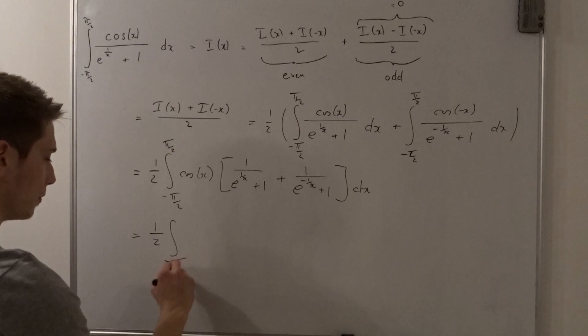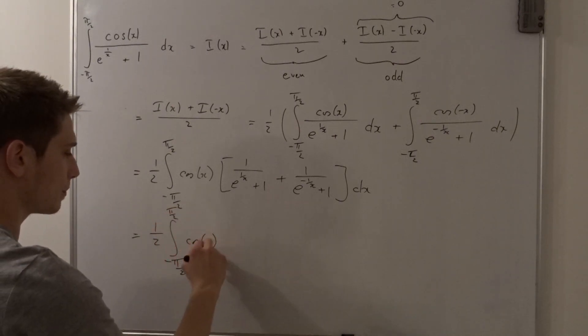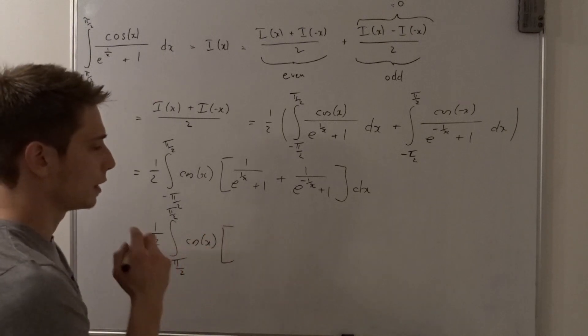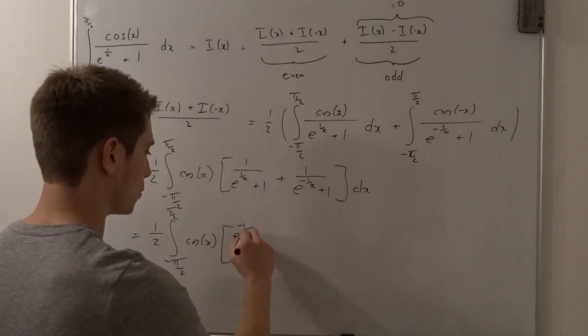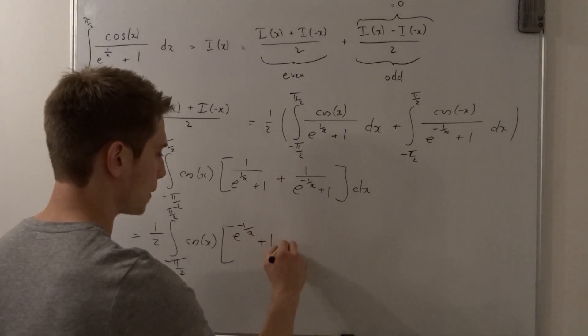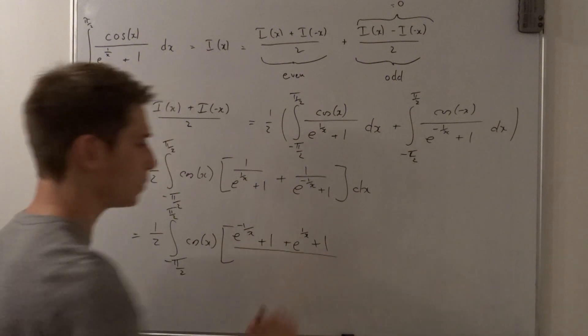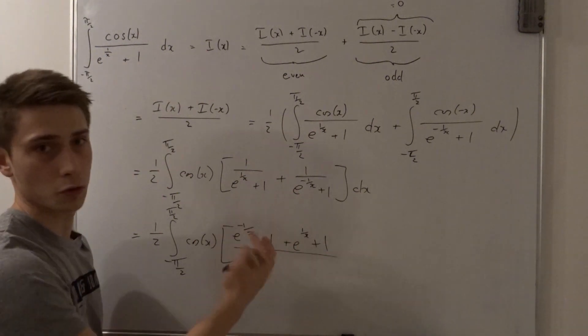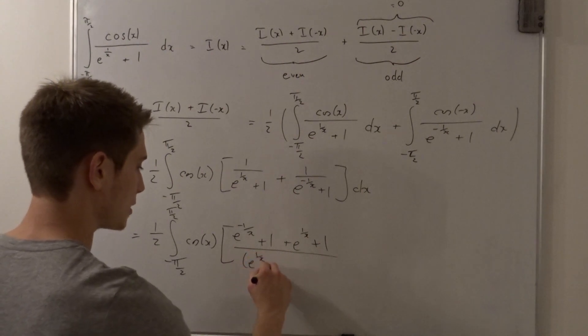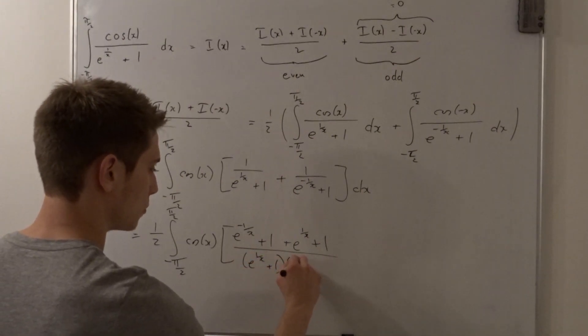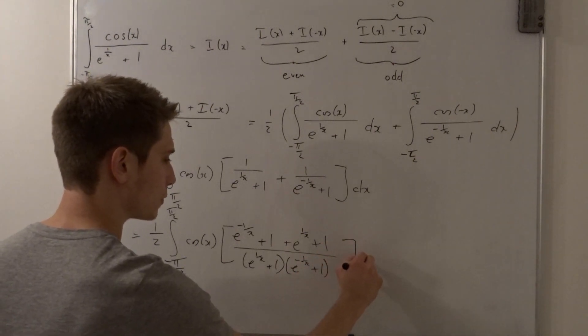So that's one half times the integral of minus pi over 2 to pi over 2 of cosine of x times. So what do we get? It's e to the minus 1 over x plus 1 plus e to the 1 over x plus 1 divided by those two multiplied together. So that's 1 over x plus 1 times e to the minus 1 over x plus 1 plus 1. And all of this times dx.